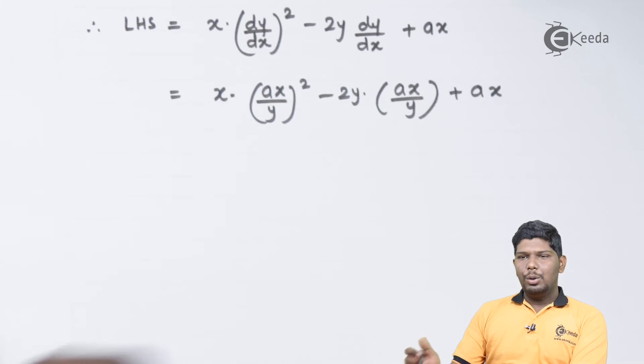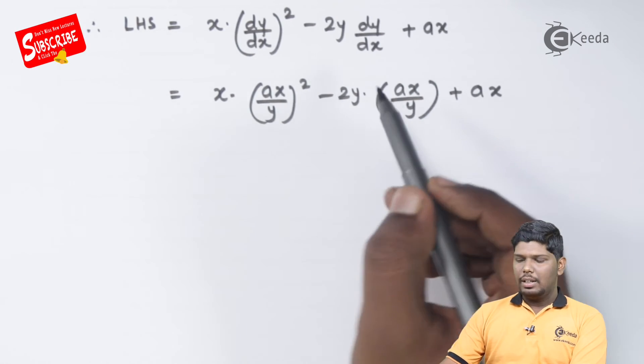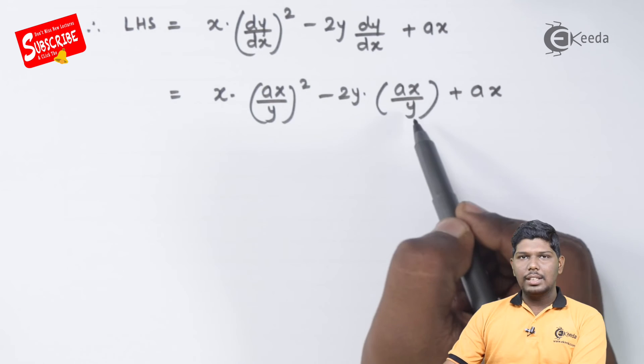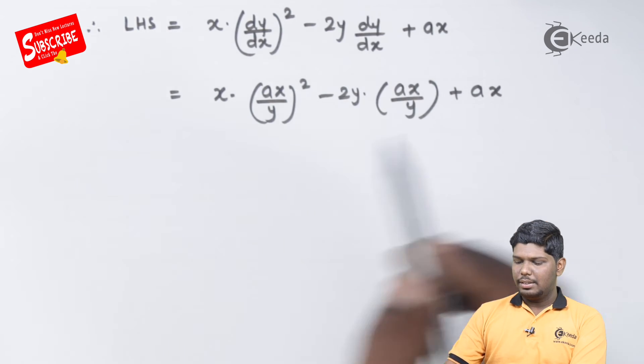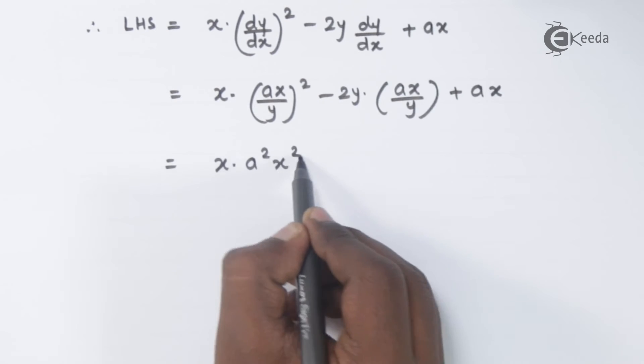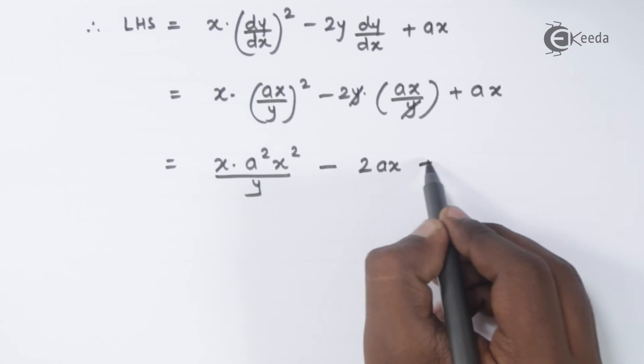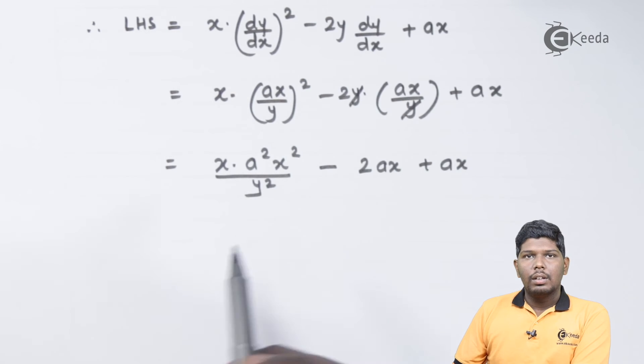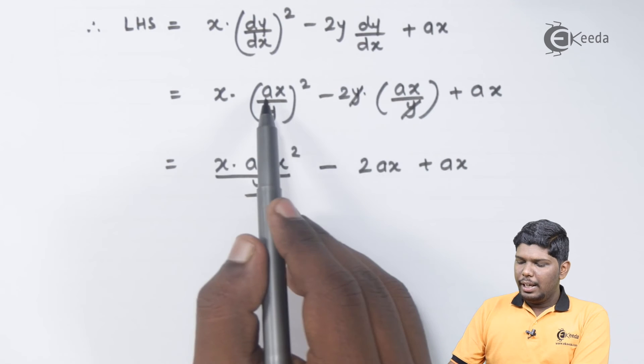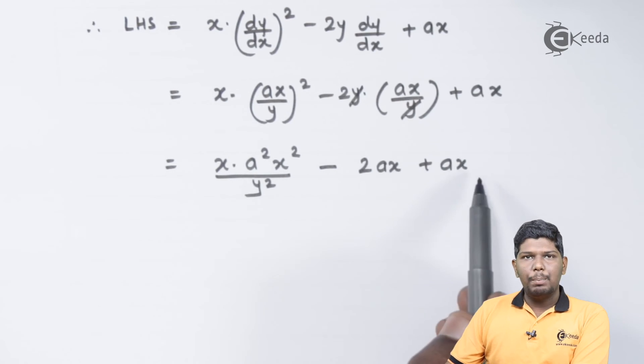So after substitution we have x(ax/y)² - 2y(ax/y) + ax. This will give you x(a²x²/y²) - 2ax + ax.